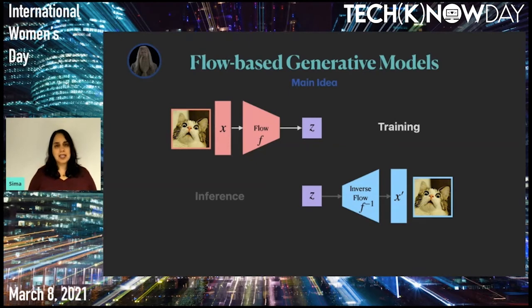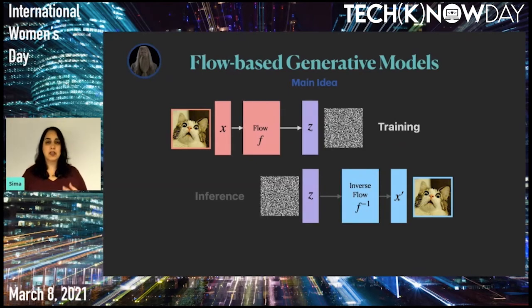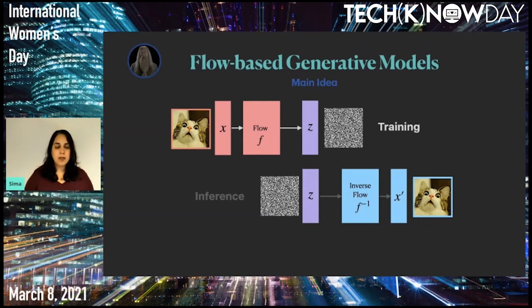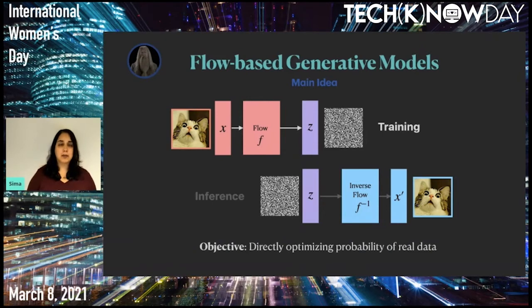The other change is that because this is an invertible function, we want the dimension of Z to be the same as X, not a smaller dimension like in typical autoencoders. Schematically, Z is in the same dimension as X, only normally distributed. These changes allow us to directly optimize the probability of real data, which is our holy grail.